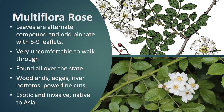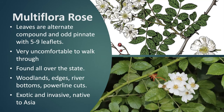Dan: One more thing to highlight about multiflora rose — look at what's called the stipular spine. You can see how it's kind of fringed and frayed in different directions. Native roses in Illinois do not have that tendency — their stipule will be a single, solid structure. So if you come across a rose and want to know whether it's the invasive multiflora rose or a native rose, quickly look at that stipular area and see whether it's fringed or solid.